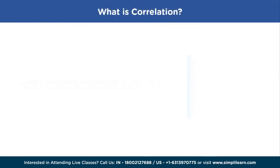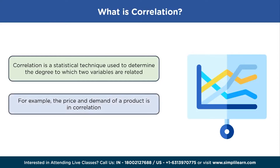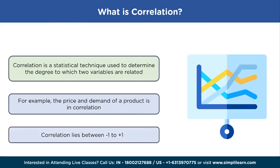What is correlation? Correlation refers to a statistical relationship between two entities. It measures the extent to which two variables are linearly related. For example, the price and demand of a product are in correlation — they are linearly related. The value of correlation always lies between minus 1 and plus 1.